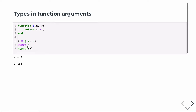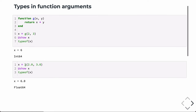Likewise, using a decimal place, 2.0 is a Float64, as is 3.0. Multiplying those together also gives a Float64. So when this function is called with floats, Julia compiles a version with two Float64 arguments and returns 6.0 of type Float64.